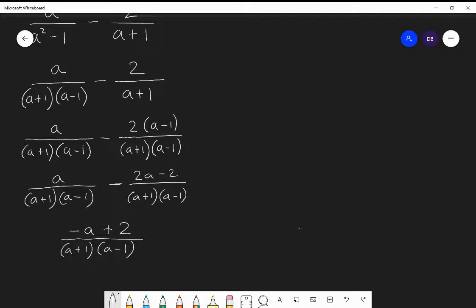It's actually nicer. It's better to write it as two minus A on top. It's more elegant. Both of them have positive two and both of them have negative A, but it's a more elegant way of writing it. So the best way of writing your answer is as written there. Two minus A over A plus one, A minus one.